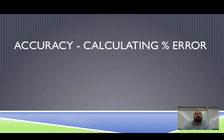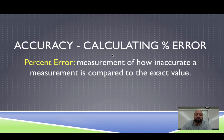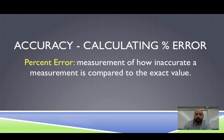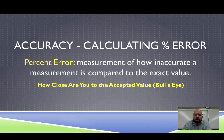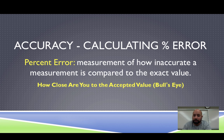So how do we calculate whether we are accurate or not? That's where percent error comes in. It is a measure of how inaccurate a measurement is when compared to the exact value, and we turn it into a percentage to make it easier to communicate and work with. I like to think of it as: how close are you to your accepted value, your bullseye? A small percent error means you were close. If you're only 1% off, that's great. If you were 100% off, you were nowhere near your target. The bigger the value, the less accurate you are.